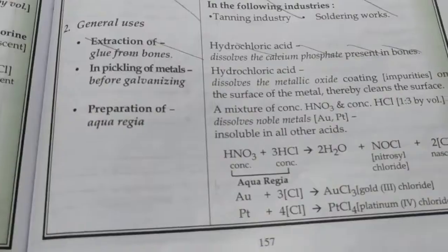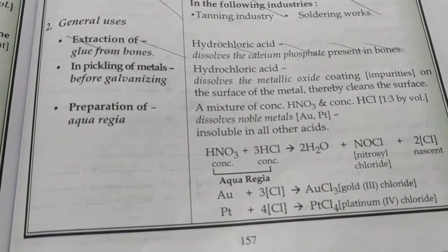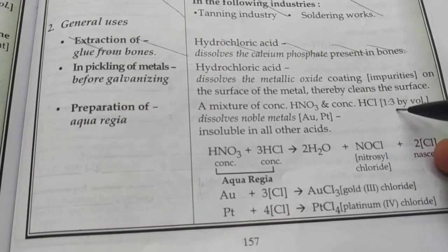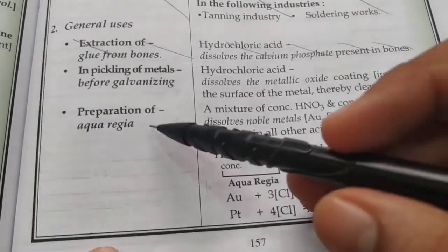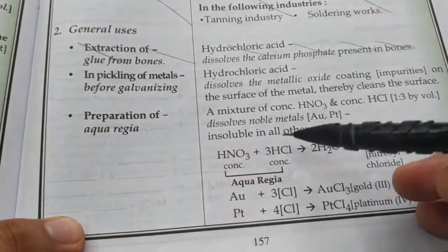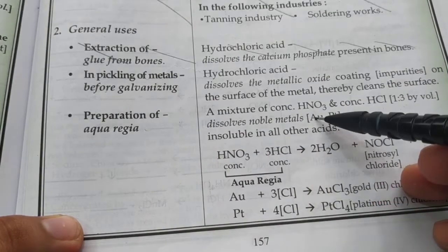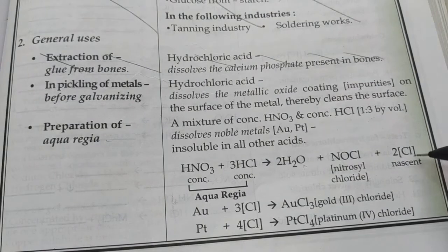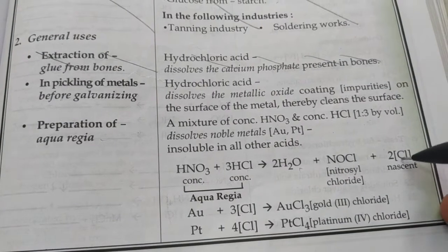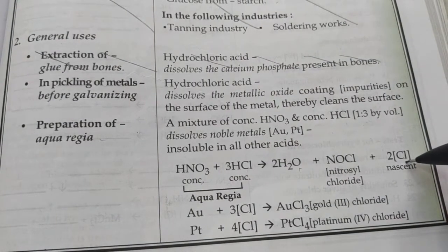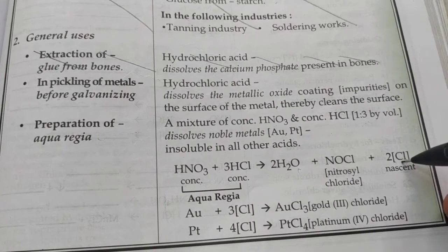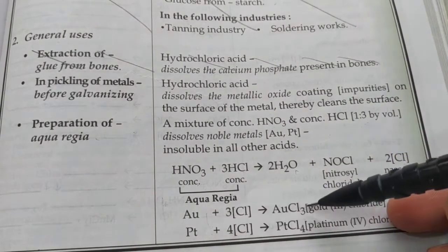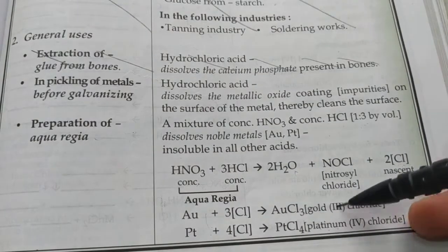One interesting use of hydrochloric acid: when conc. HNO₃ and conc. HCl are mixed in a ratio of 1:3, the mixture is called aqua regia. It is so powerful it can dissolve noble metals. Aqua regia produces nascent chlorine — single, highly reactive chlorine atoms whose octets are incomplete. These attack the noble metal to form the respective chlorides, which are soluble in water.